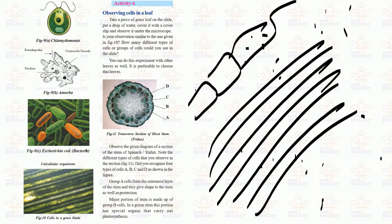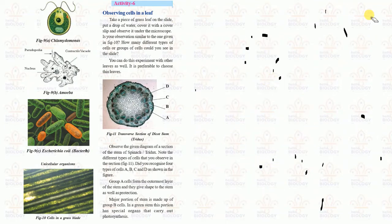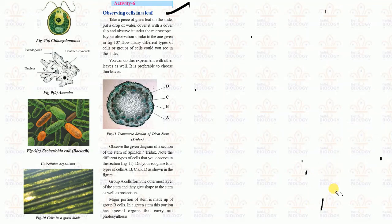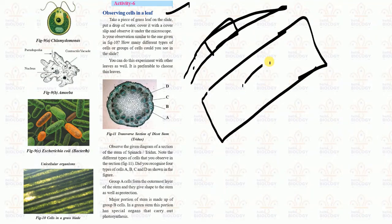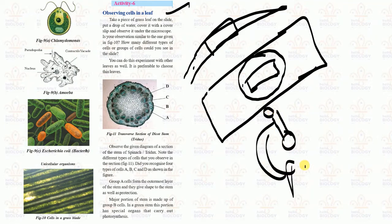In Activity 6, we observe cells in leaves. First, collect grass from a garden. Take a small piece of grass and place it on a glass slide, then cover it with a cover slip. Focus it under the microscope to observe the cell structures.